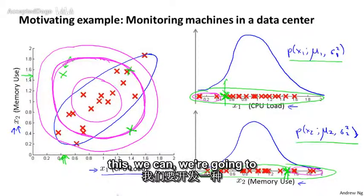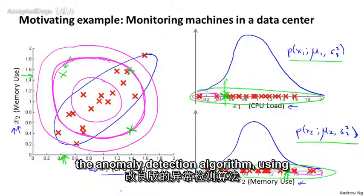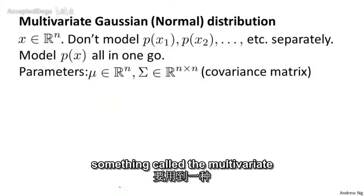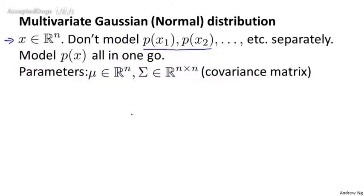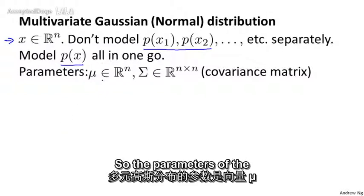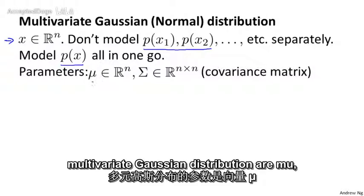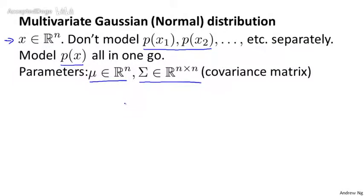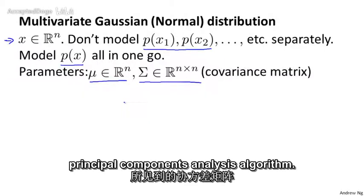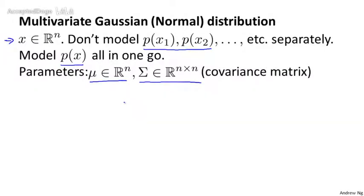So, in order to fix this, we're going to develop a modified version of the anomaly detection algorithm using something called the multivariate Gaussian distribution, also called the multivariate normal distribution. So, here's what we're going to do. We have features x which are in Rn, and instead of modeling p of x1, p of x2 separately, we're going to model p of x all in one go. So, model p of x all at the same time. So, the parameters of the multivariate Gaussian distribution are mu, which is a vector, and sigma, which is an n by n matrix, called the covariance matrix. And this is similar to the covariance matrix that we saw when we were working with the PCA, with the principal components analysis algorithm.